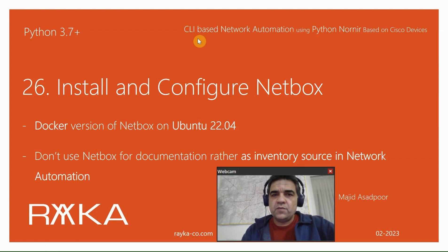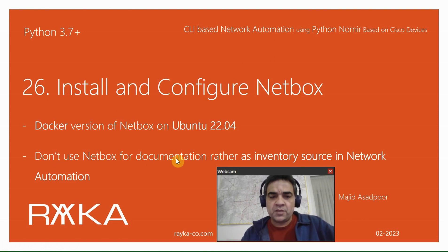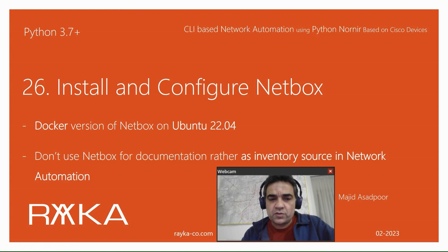Welcome to another video on CLI-based network automation using Python Nornir based on Cisco devices. In this section, we will install and configure the Docker version of NetBox on Ubuntu 22.04. NetBox is usually used for documentation purposes, but we will not use NetBox for documentation — rather as an inventory source in network automation. From the beginning of the course until now, we have used Nornir native inventory management, but in the next section we will use NetBox as an inventory source.